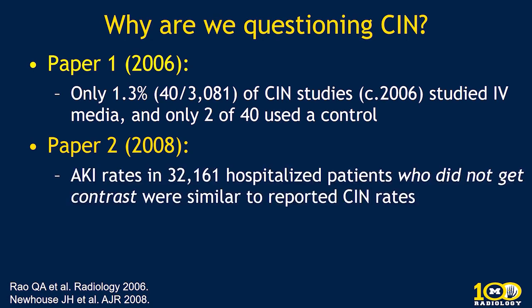In 2008, he followed this by looking at acute kidney injury rates in 32,000 hospitalized patients who did not get contrast, and found that those AKI rates were similar to reported CIN rates. These studies did not tell us that CIN was not real — they simply made us question if it was being overdiagnosed.